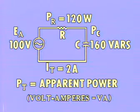The total power using I total and E total in a resistive reactive circuit, such as this one, is called apparent power.